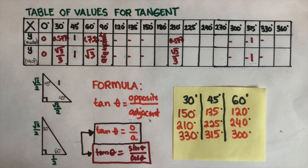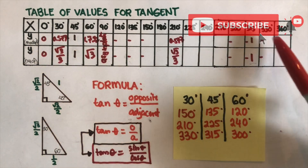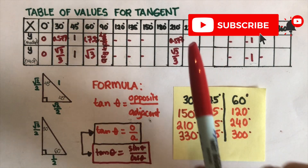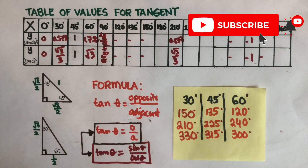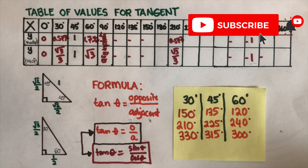Your next task is to finish all of the remaining values. Once you determine the measures for all of them and graph it on an x and y axis, it will give you the shape of a parent tangent graph. If you found this video helpful, please like and subscribe for more math videos. See you next time!